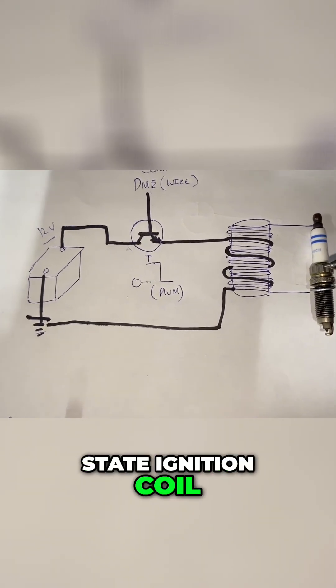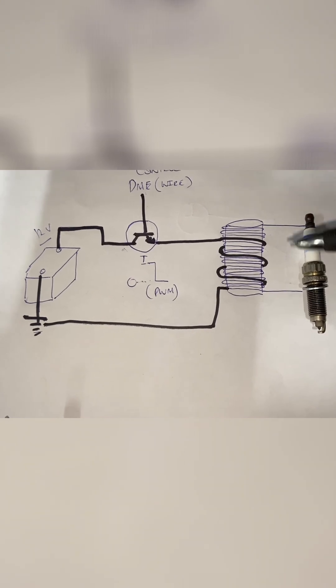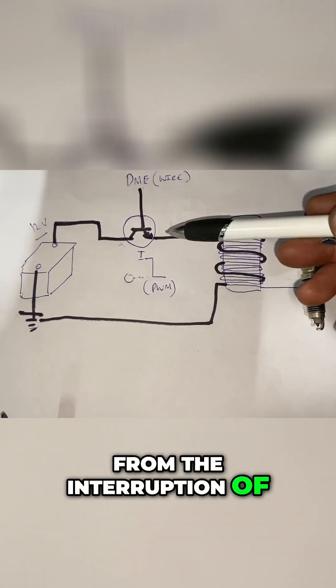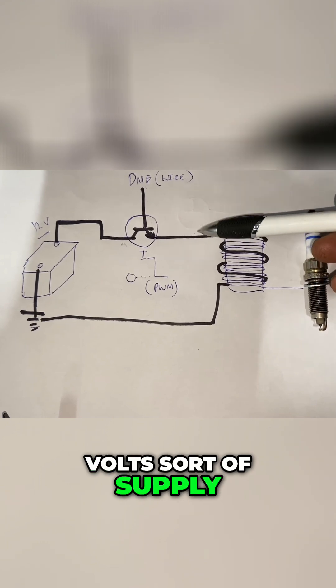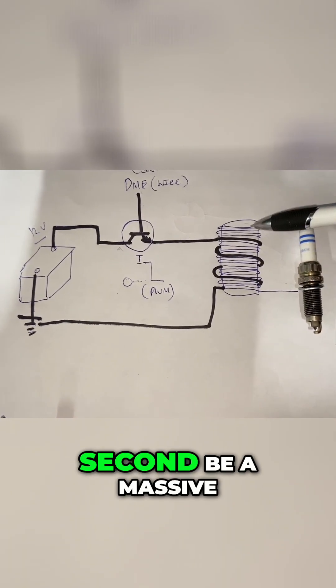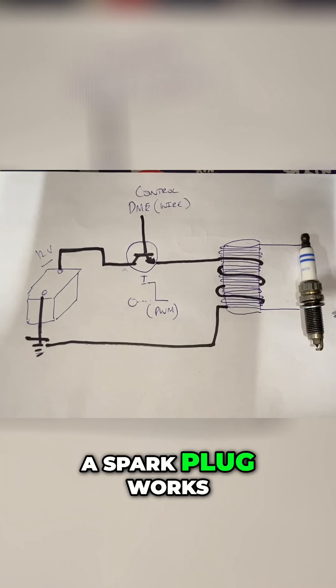It's a solid state ignition coil and they can produce about 40,000 volts actually from the interruption of this 12 volt supply from the transistor. When we interrupt the primary we induce in the secondary a massive voltage spike, and that's basically how the spark plug works.